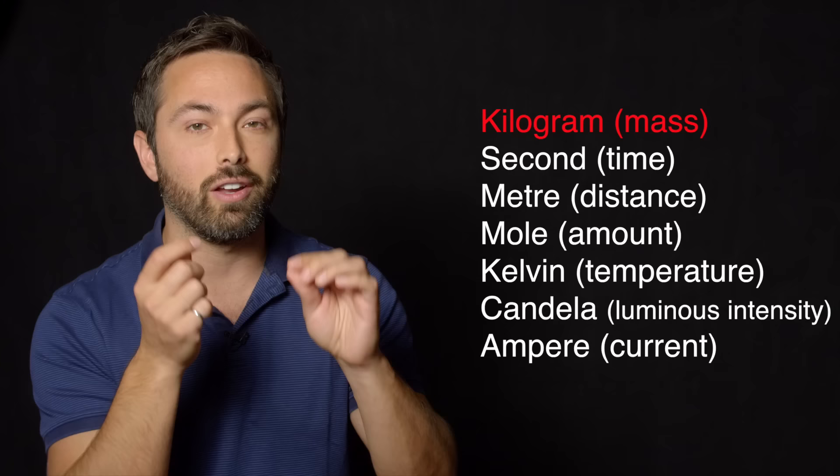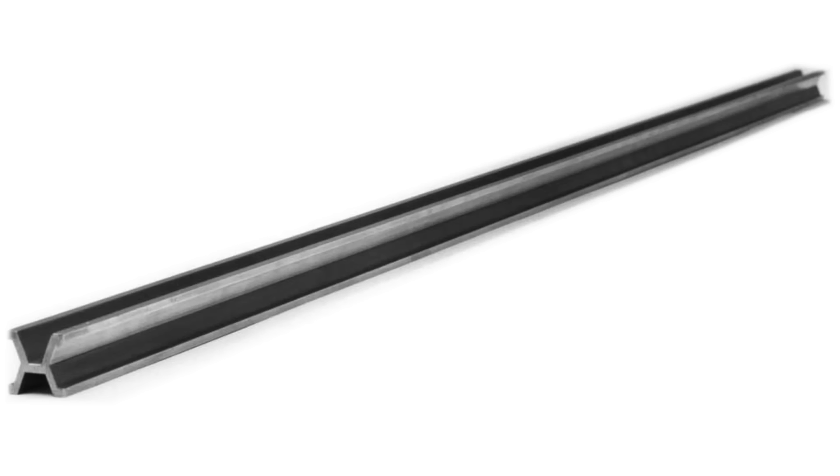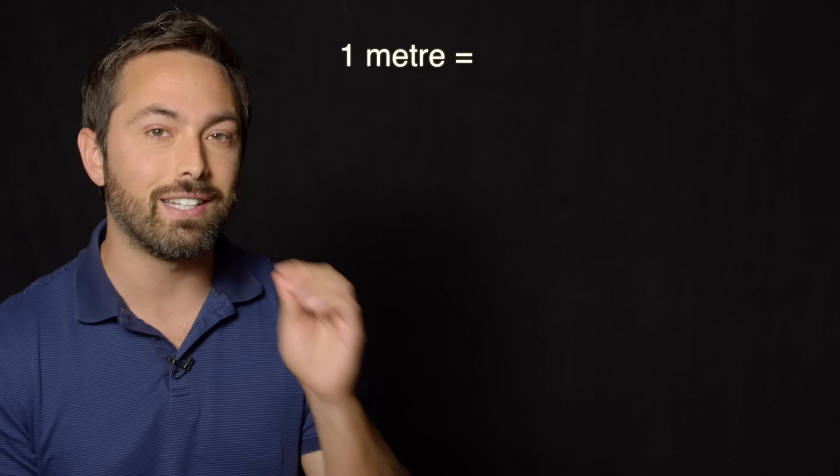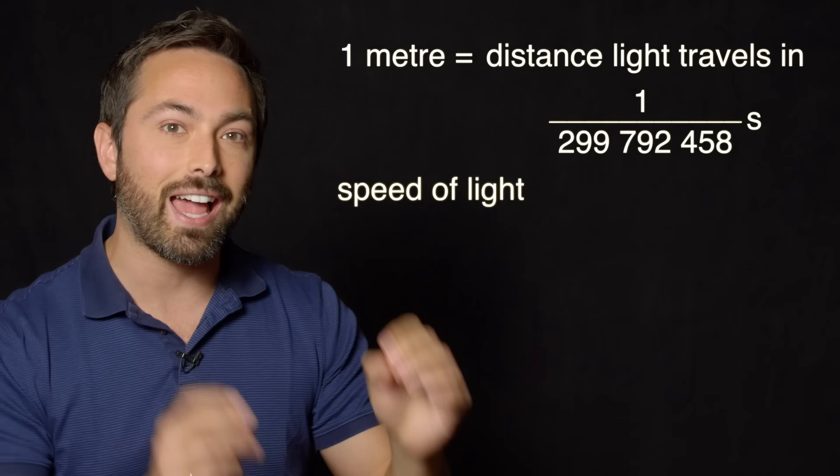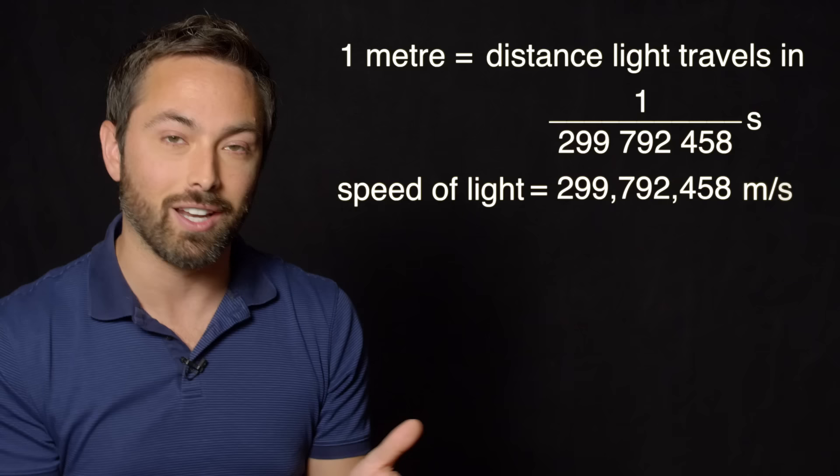Plus, the kilogram is the last of the base SI units to still be defined by a physical object. The meter, for example, used to be defined as the length of a platinum bar in Paris, but in 1983, it was redefined as the distance light travels in 1 over 299,792,458ths of a second. This definition means that the speed of light is set to exactly 299,792,458.0000 etc. meters per second. Note how this works.